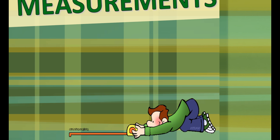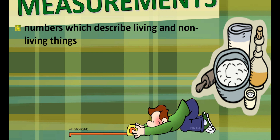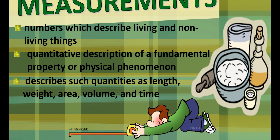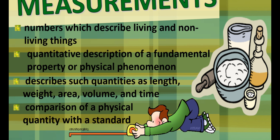For this slide, let's have first the definitions of measurement. First, numbers which describe living and non-living things. Second, quantitative description of a fundamental property or physical phenomenon. Third, describe such quantities as length, weight, area, volume, and time. And lastly, comparison of physical quantity with a standard.